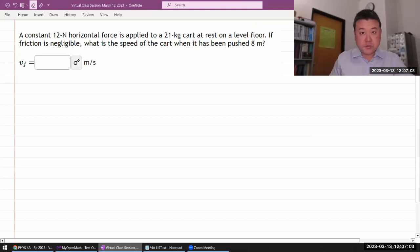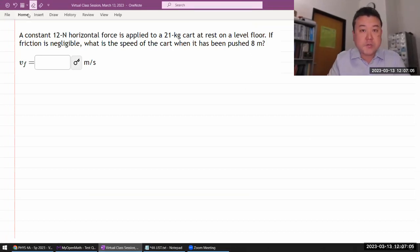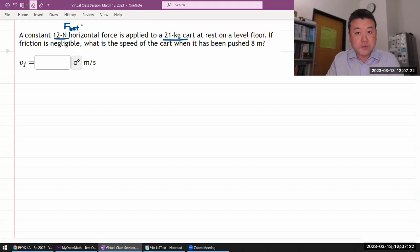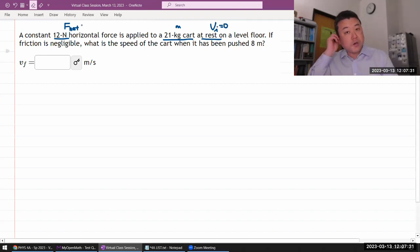Alright, so let me work on this question. It's giving a description of an object on which a force is being applied. It says a constant amount of force - I think the way it's wording the remainder of the question, this is meant to be the net force. So this amount of net force is applied to some cart of some mass initially at rest, so I know initial velocity of zero on a level floor. Okay, so I don't have to worry about gravitational potential energy changing. If friction is negligible, what is the speed of the cart when it has been pushed 8 meters delta x.